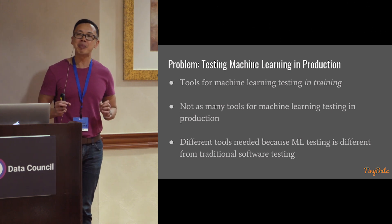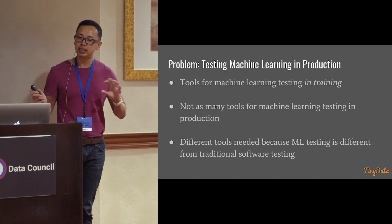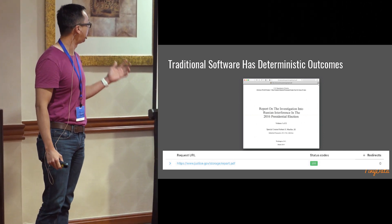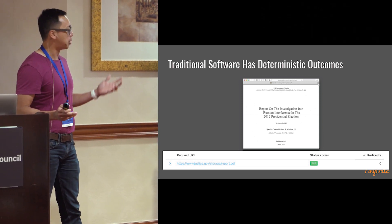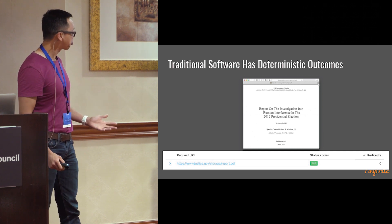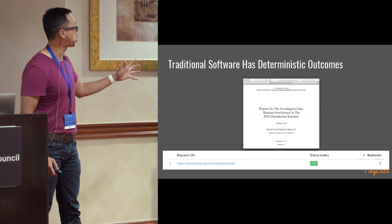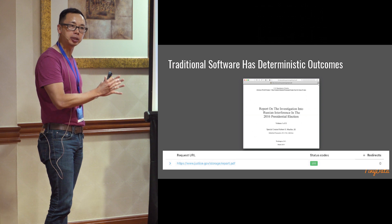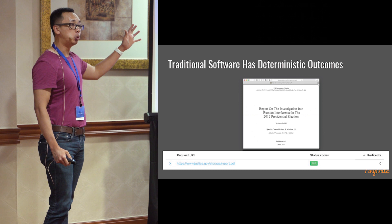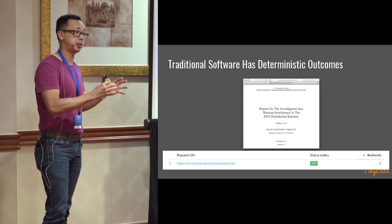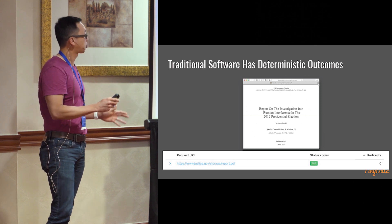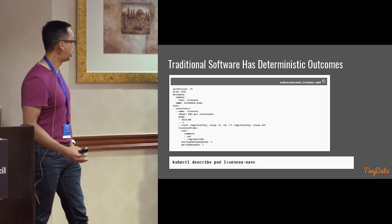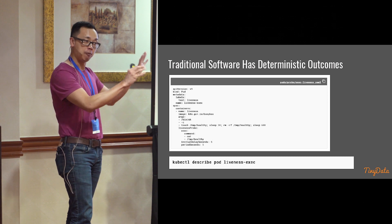The reason is that machine learning is fundamentally different from traditional software. With traditional software — here's a web page presenting a popular PDF download — if everything is running correctly and I request a web page, I should be able to download the report and get a 200 status code. It's very deterministic. If something is wrong, I get a different error code. If a wrong report is downloaded, that means there's a bug in the system we can fix. If you run a cluster of containers, there are even ways to check for health and liveness and restart them if something goes wrong.